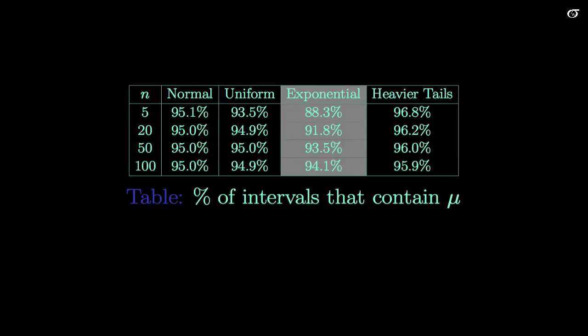What about the exponential distribution, where we have some skewness? The story is a little worse here. When we have a very small sample size of 5, our true coverage probability of our 95% interval is actually closer to 88%, so it's not working quite as well. But as our sample size gets bigger and bigger, this coverage probability tends towards 95%. Once we get up to 50 or so, we're up to 93.5%. But for smaller sample sizes, we're overstating the case if we say we have a 95% interval.